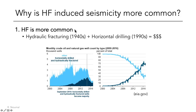Why is hydraulic fracturing inducing seismicity more commonly now? The first reason is that hydraulic fracturing itself is more common. It's not a new technology — we've been doing this since at least the 1940s. But it wasn't until the early 2000s that hydraulic fracturing merged with horizontal drilling technology. Oil companies now drill vertically a few kilometers and then horizontally a few kilometers as well, hydraulically stimulating that entire horizontal interval, increasing permeability, and extracting oil. This led to the rise of unconventional reservoirs and has catapulted the United States to becoming the largest oil producer in the world.